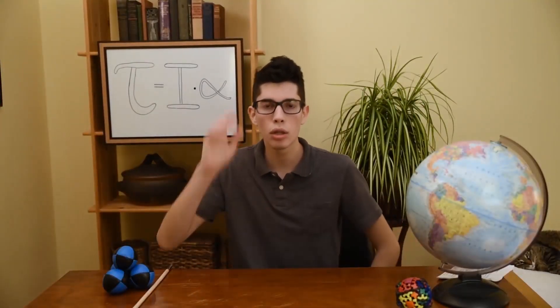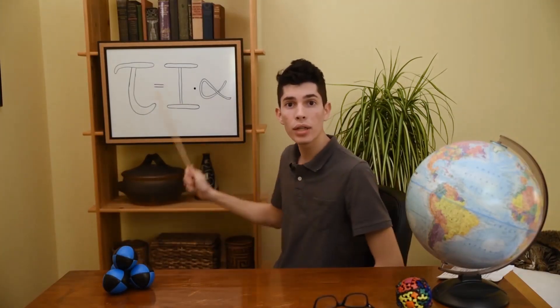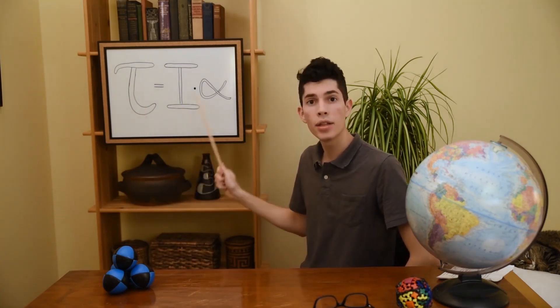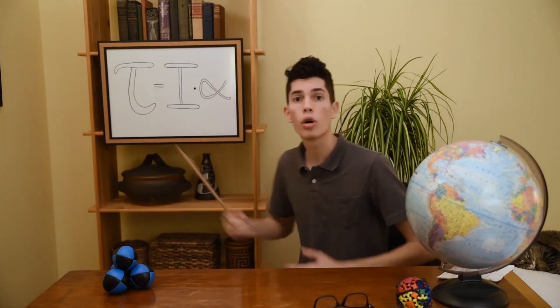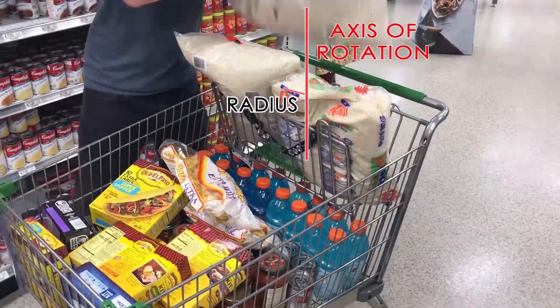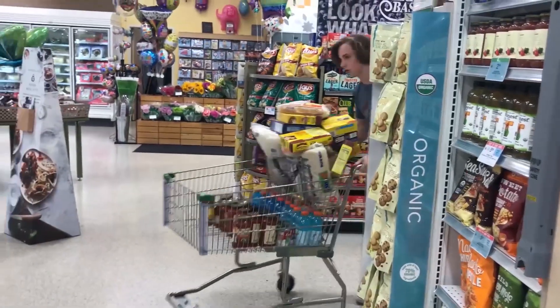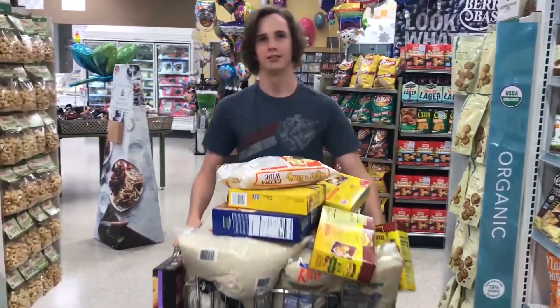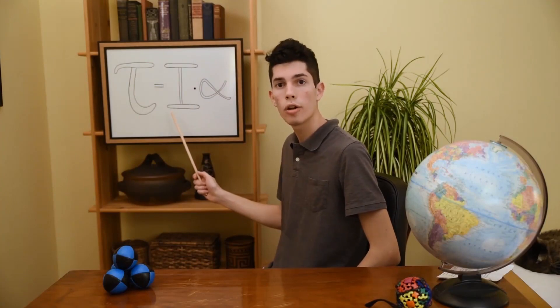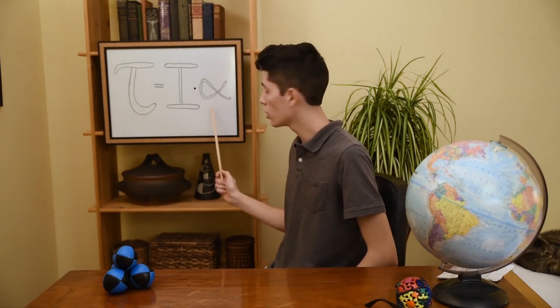Now, the mathematical explanation for this involves not only rotational inertia, but also torque. Torque is the rotational version of force, and the amount needed to rotate something is based on an object's rotational inertia and the desired angular acceleration, or acceleration in a circle. With the shopping cart, we decrease the rotational inertia in order to decrease the torque required to turn it. But sometimes, for a given torque, we want to increase the rotational inertia in order to decrease the angular acceleration, or slow it down.